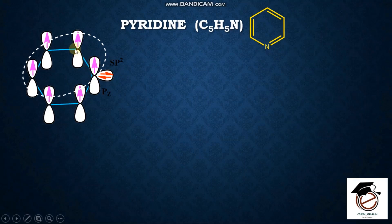Carbon atoms are sp2 hybridized. This is the perpendicular unhybridized p-orbital. The unhybridized orbital creates a ring current, and it is a pi cloud formation.